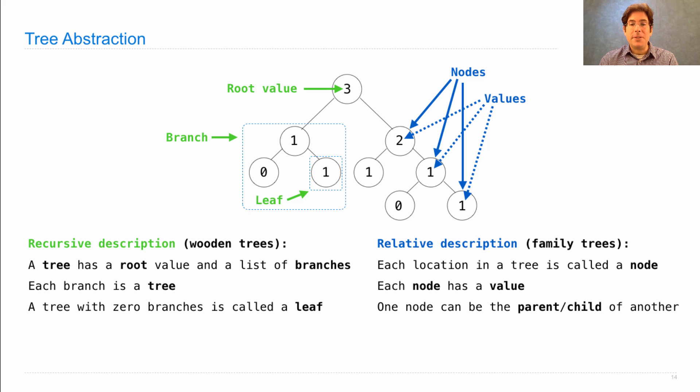The reason I call these family trees is that one node can be in a parent relationship with another, or a child relationship. So we say, for instance, that this node is the child of this node. And likewise, this node is the parent of this node. This is often referred to as the root node because it holds the root value of the entire tree. And these notions of parent and child also extend to other familial relationships. So you might say that this one is a grandchild of this two, or that all of these values are descendants of three.